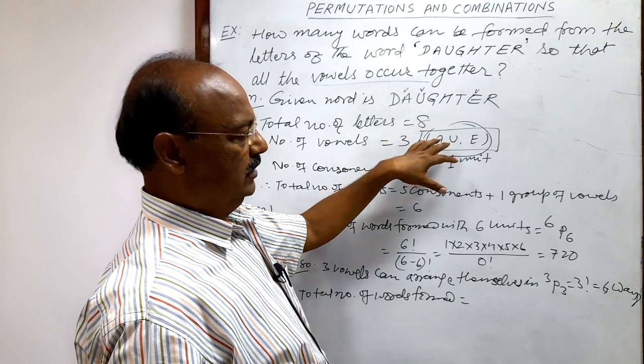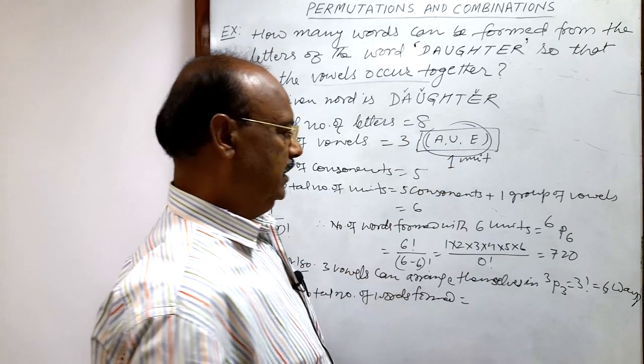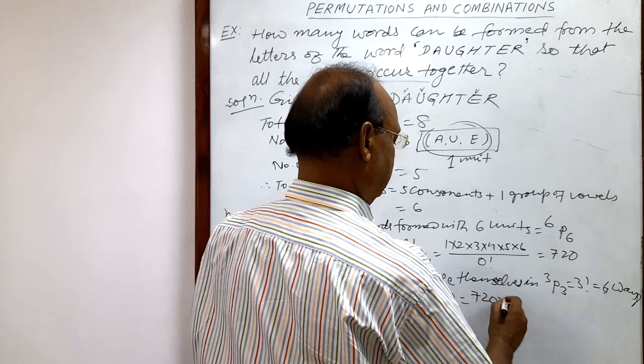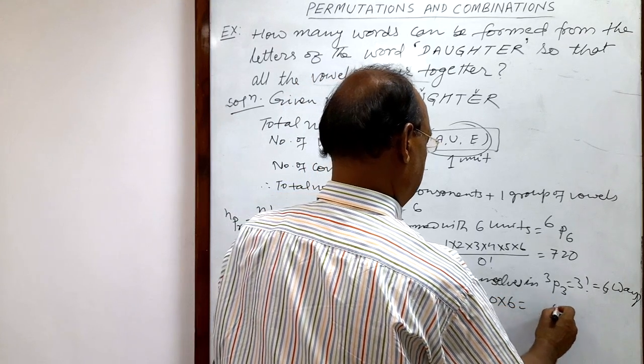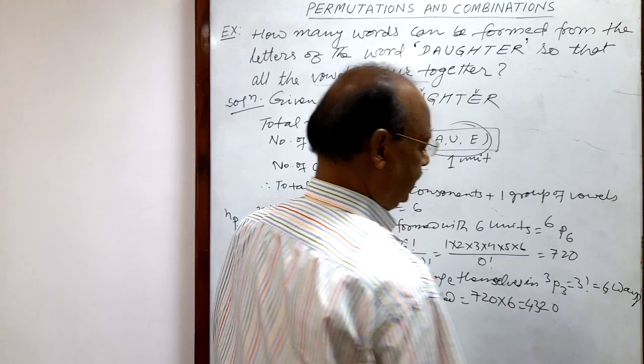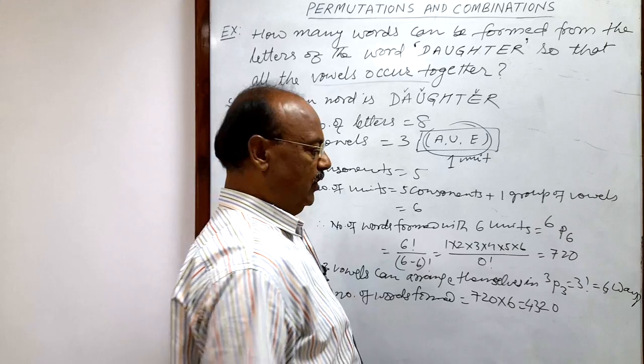is these two figures will be multiplied: 720 into 6, and this is equal to 4320 words will be formed.